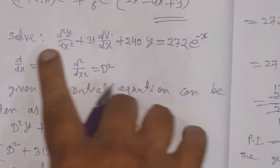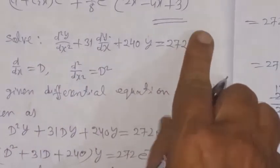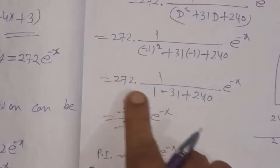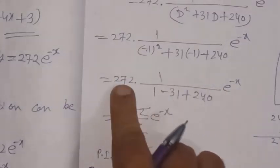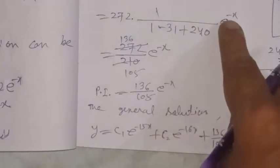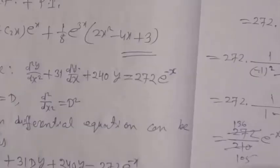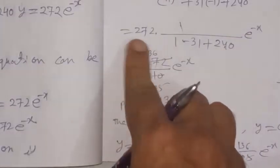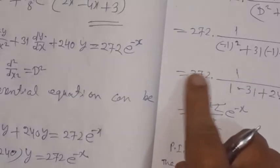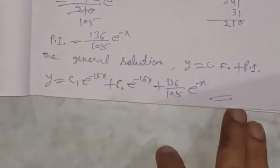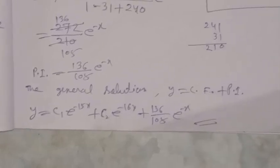This question was likely constructed so that when e^(+x) is used the sum works out nicely to 272. Here the sign was changed to minus, making this a slightly different question. Regardless, we have found the solution to the given problem. Thank you very much for listening. Alhamdulillahi Rabbil Alameen.